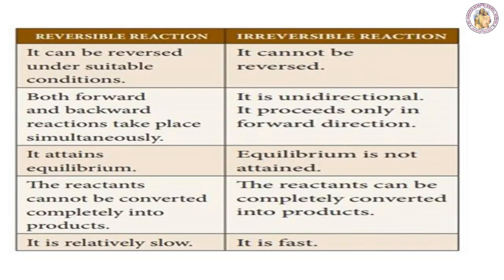The difference between reversible and irreversible reactions: a reversible reaction can take place under any condition — both forward and backward reactions take place and equilibrium is attained; reactants cannot be completely converted into products; it is a relatively slow reaction. An irreversible reaction cannot be reversed — it is unidirectional, proceeds only in the forward direction, equilibrium is not attained, reactants can be completely converted into products, and it is a fast reaction.